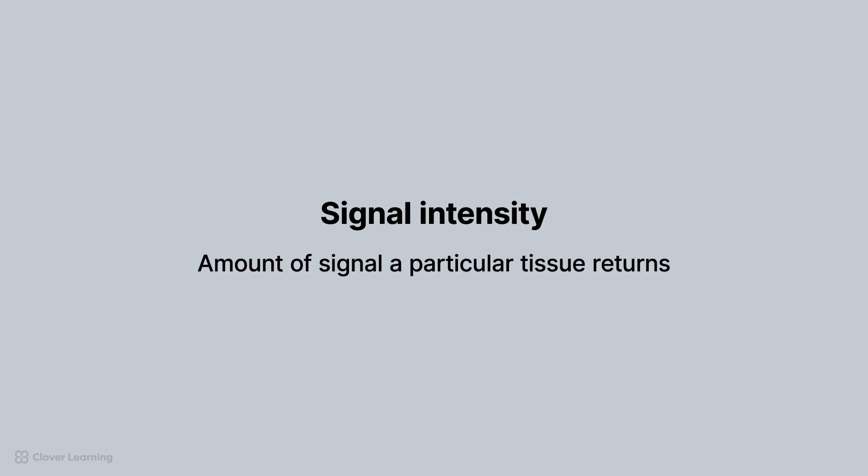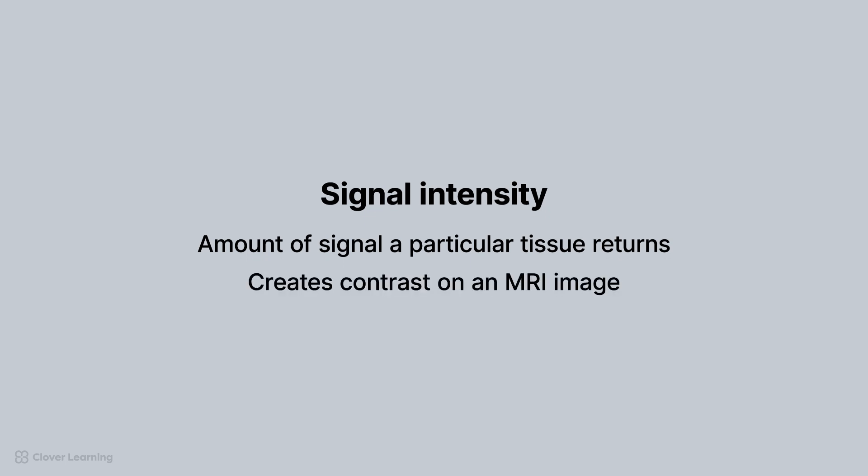Signal intensity on an MRI image represents the amount of signal a particular tissue returns. Signal intensity is what creates contrast on an MRI image.